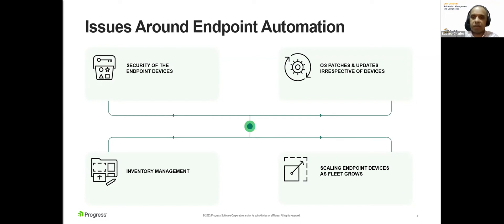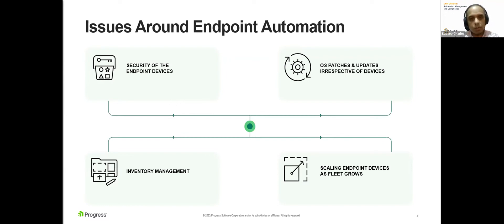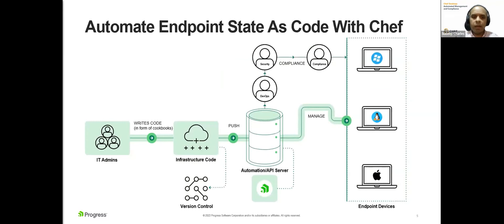Inventory management is another challenge — many try to do this using Excel sheets, which are not scalable, error-prone, and difficult to manage. Then there is scale: with a large fleet to manage across the globe, the team spends many cycles trying to ensure scale is managed and machines are up to date. Without proper tooling to help, configuration management becomes very difficult — which is where Chef comes in to automate your endpoints.